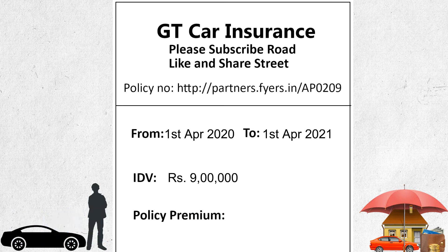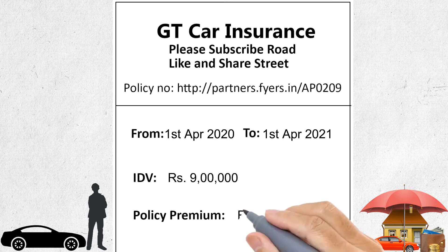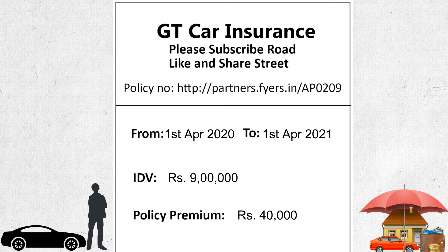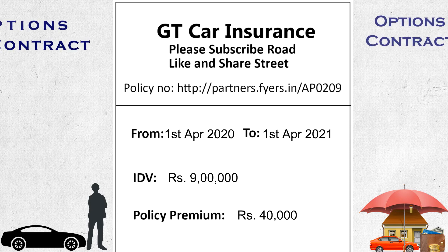Let us see this from the insurance company's point of view. If the car is met with an accident and is fully scrapped, Mr. Sunil can sell the car to the insurance person for 9 lakh rupees. Policy premium — say for example 40,000 rupees. That means Mr. Sunil should pay 40,000 rupees to the insurance person to enter into this contract. This contract can be called an options contract.